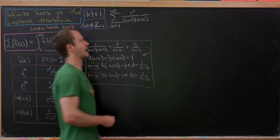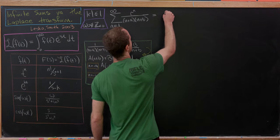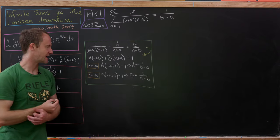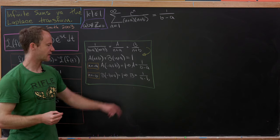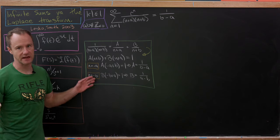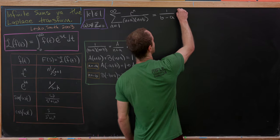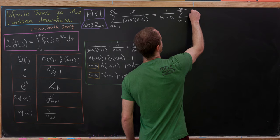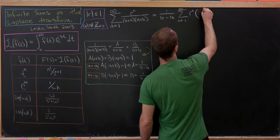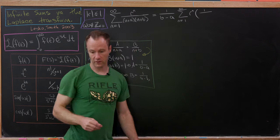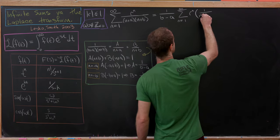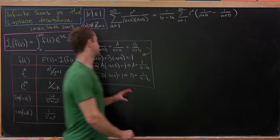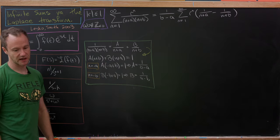Putting that into our original sum, we can factor out 1 over (b minus a) and write the sum as n goes from 1 to infinity of r to the n times the quantity 1 over (n plus a) minus 1 over (n plus b). That comes from our partial fraction decomposition.